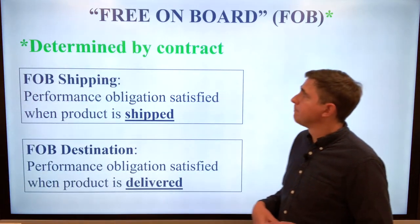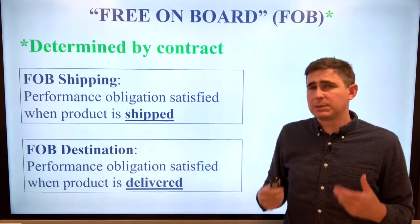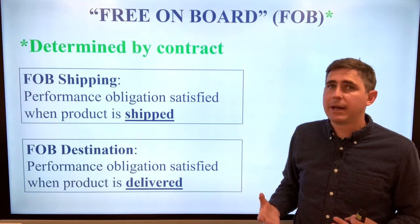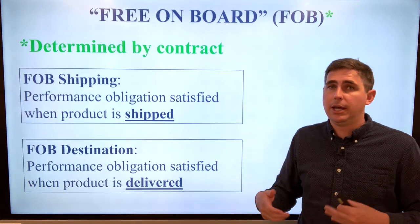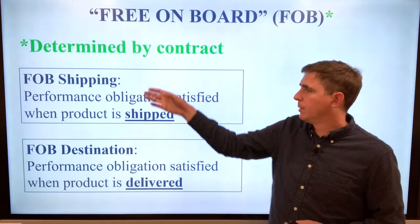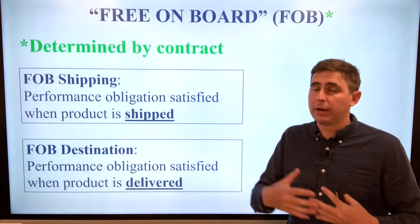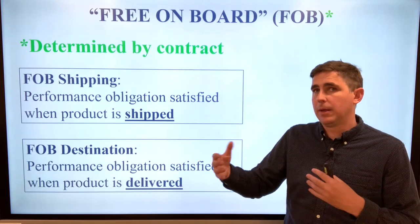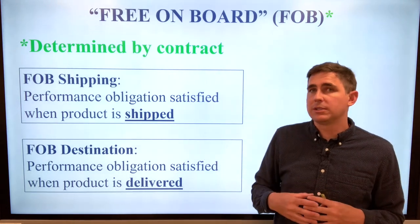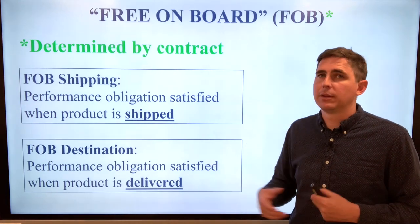To recap: free on board, or FOB, represents explicit details determined by a contract — not by an accountant. The accountant reads the contract and determines when to recognize revenue. There are two terms: shipping point and destination point. FOB shipping point means you can recognize revenue when the product leaves the seller's warehouse. FOB destination means the seller recognizes revenue only when the product is delivered to the customer.